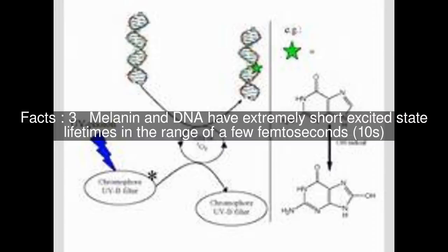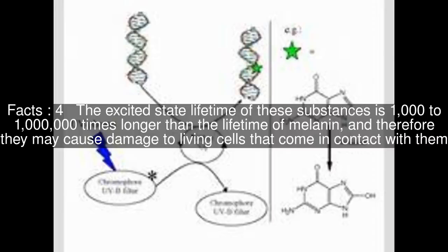Melanin and DNA have extremely short excited state lifetimes in the range of a few femtoseconds. The excited state lifetime of other substances is 1,000 to 1,000,000 times longer than the lifetime of melanin, and therefore they may cause damage to living cells that come in contact with them.